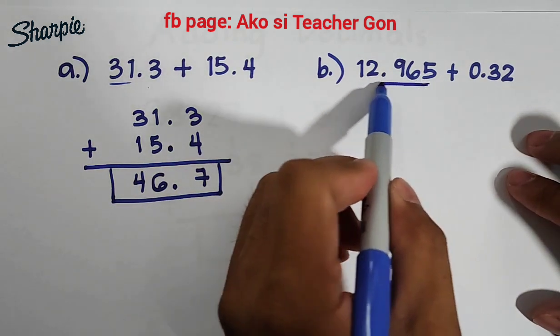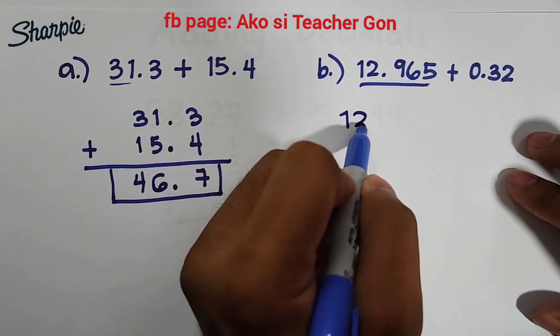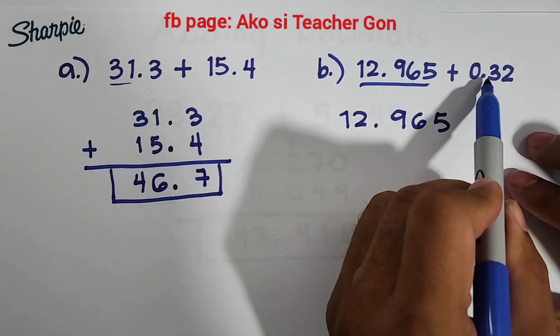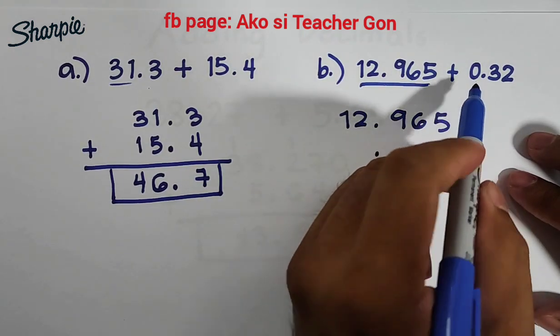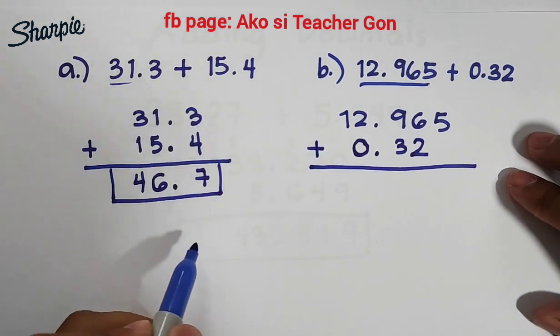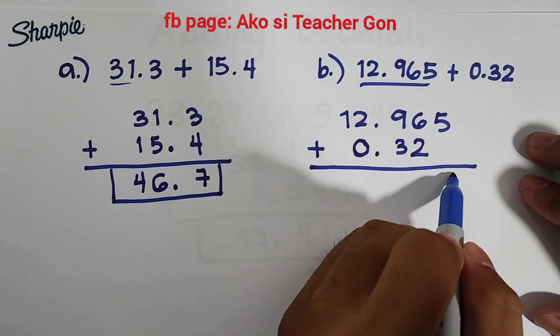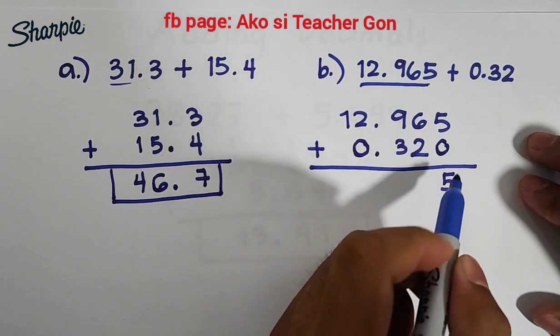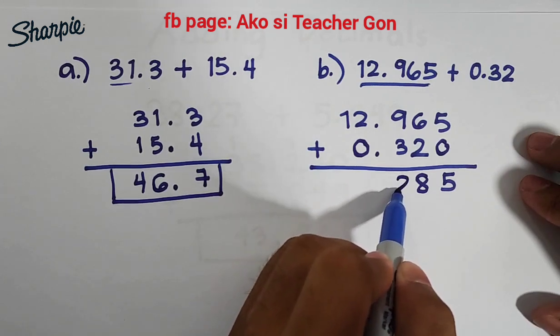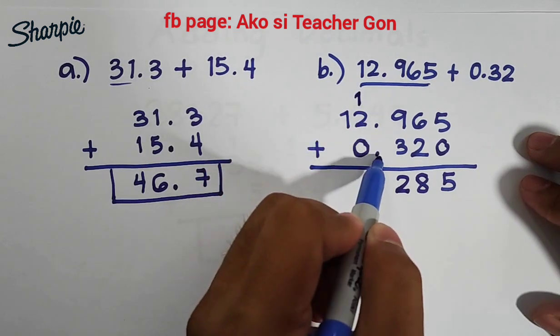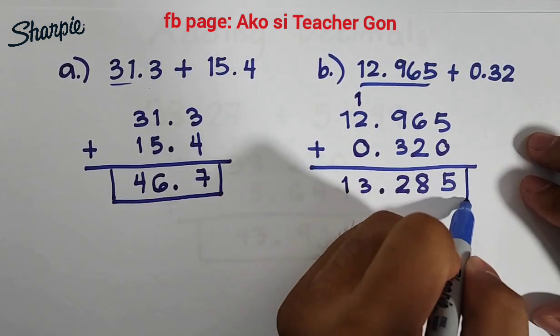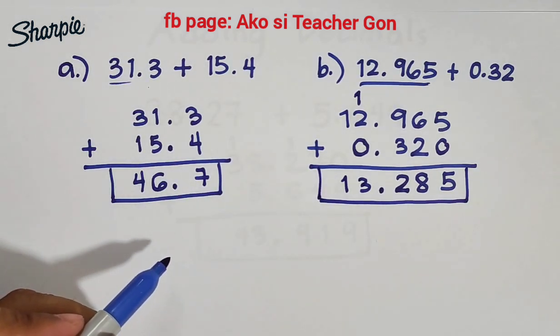Okay now let's move on with letter B. For letter B we will copy first this decimal we have 12.965, and then as you can see the second decimal is 0.32. We will copy this decimal, we will copy your 0 here then 32, so we are now ready to add these decimals. So you have 5, bring down 5 because this is 0, 5 plus 0 is 5, 6 plus 2 is 8, 9 plus 3 is equal to 12, so we have here 2 and then carry 1, but don't forget to copy your decimal point. You have here your decimal, 1 plus 2 is 3, and then bring down 1. This means guys that the sum of our two decimals is 13.285.